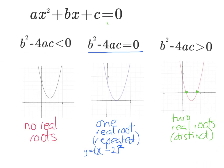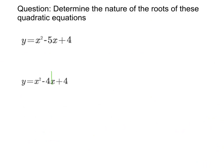Okay, what kind of questions do we get on this? Here we're being asked to determine the nature of the roots of these quadratic equations. So first of all, let's establish what our coefficients are. In this one, we've got a is 1, b is minus 5, and c is 4.